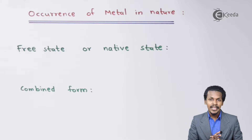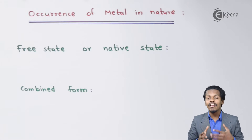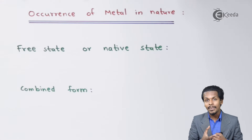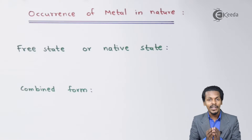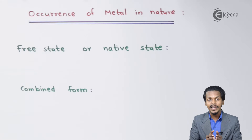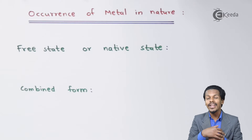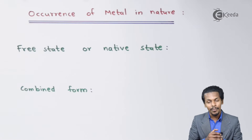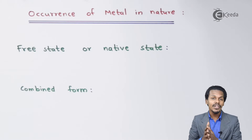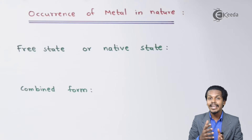These metals — gold, platinum, and mercury — are not combined with other elements. They occur in nature on their own, without any form of combination. That is why they are known as free state or native form metals.